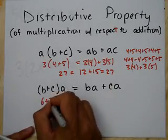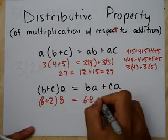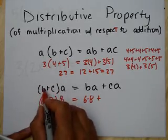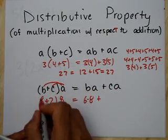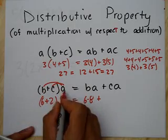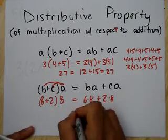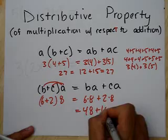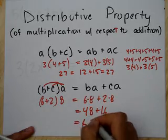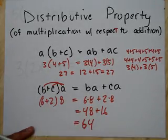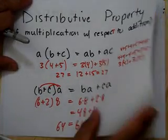Let's check it the other way: (6 plus 2) times 8 — that's eight (6+2)s. Going the other direction, B plus C times A equals B times A plus C times A. So B times A is 6 times 8 equals 48, and C times A is 2 times 8 equals 16. And 6 plus 2 is 8, times 8 is 64. And 48 plus 16 is 64. It works!